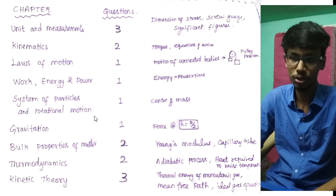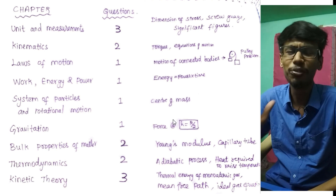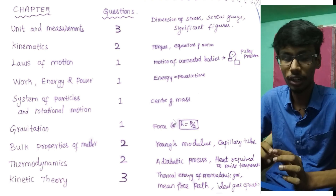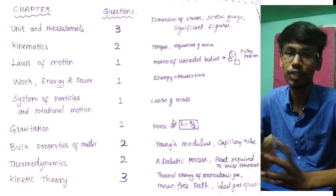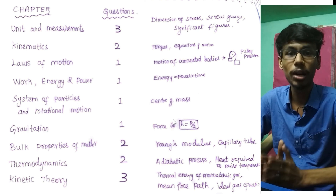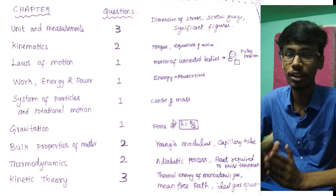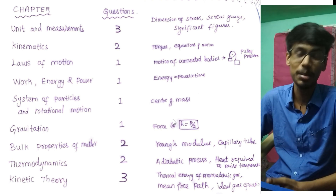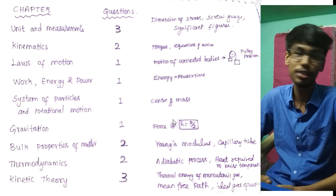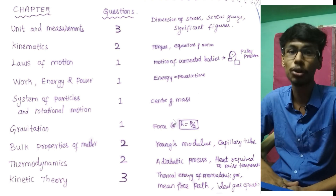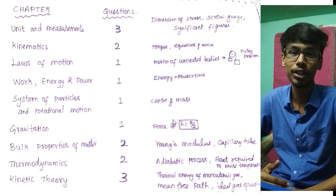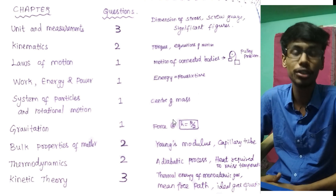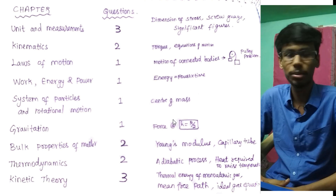System of Particles and Rotational Motion: one question on center of mass — a very high yield topic. Like a rod with two edges of different masses, where is the center of mass? Just simple. Then there is a question in the Gravitation chapter: acceleration due to gravity at a height, and acceleration due to gravity at a depth inside — one problem covering these concepts.